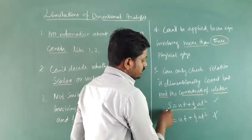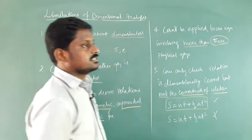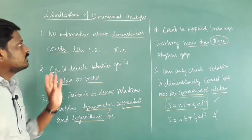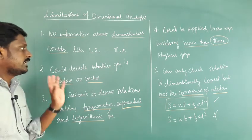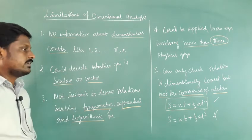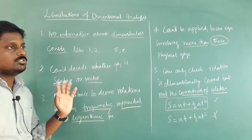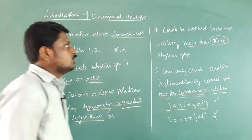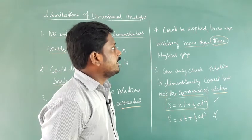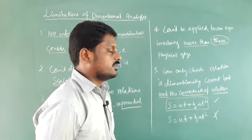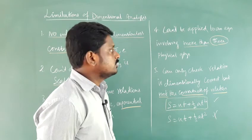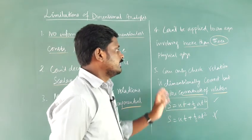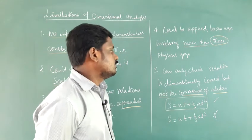To summarize, these are the limitations of dimensional analysis frequently asked in three-mark questions: first, no information about dimensionless constants; second, it cannot decide whether a quantity is scalar or vector; third, not suitable for relations involving trigonometric, exponential, and logarithmic functions; fourth, cannot be applied to equations involving more than 3 physical quantities; and fifth, it can only check dimensional correctness, not the actual correctness of the relation.